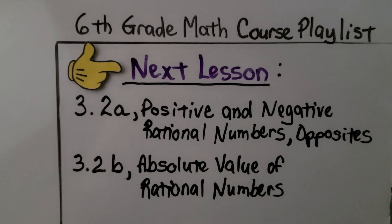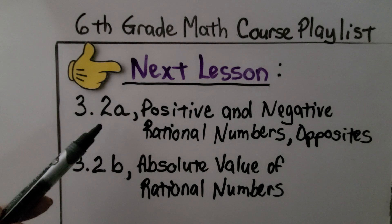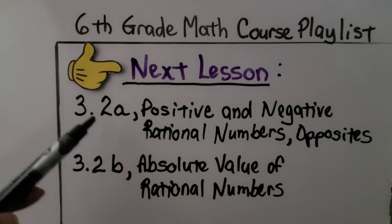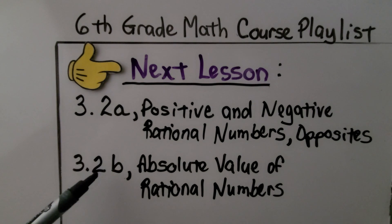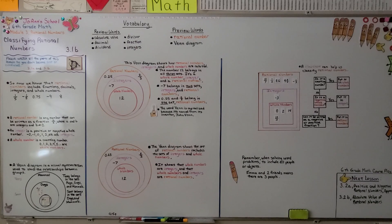Our next lesson is 3.2a — we're going to talk about positive and negative rational numbers and opposites. Then we'll do 3.2b and talk about absolute value of rational numbers. Keep trying your best, have a wonderful day, and I'll see you next time.